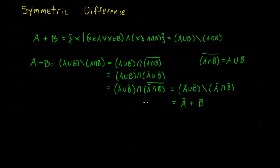So a very interesting property: the symmetric difference between two sets A and B is equal to the symmetric difference of their complements. This means all of the elements that are in A or B but not in the intersection equals all of the elements that are not in A or not in B and not in the intersection of those complements. You can think about why these two would be equal — it's a very interesting property to see written down.